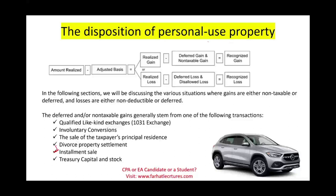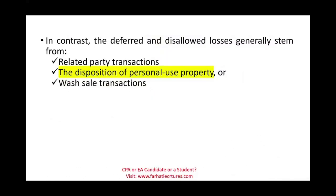When you dispose of personal use assets, you figure out the amount realized — how much you received — compared to the basis. If you have a gain, the gain is taxable. If you have a loss, the loss is disallowed. You cannot take the loss. This topic falls under the umbrella of non-taxable gains and losses, specifically disallowed losses.